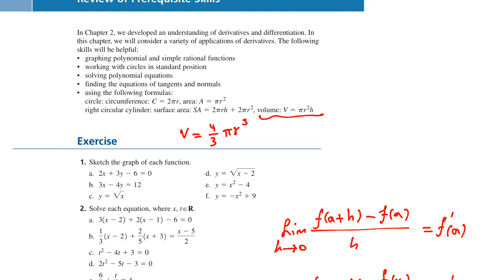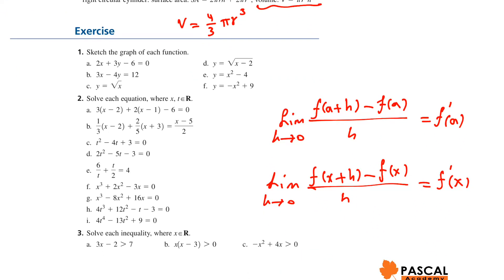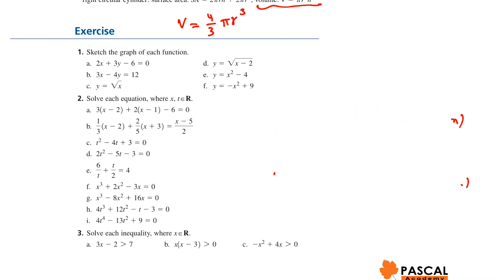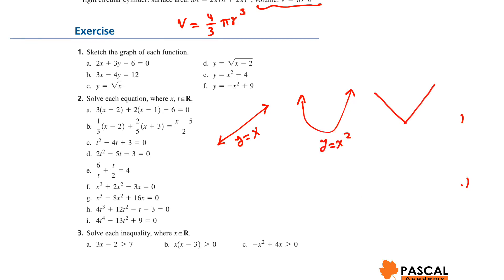What we need in this chapter is working a little bit with inequalities and knowing the graphs of basic functions. In some cases we need to draw y equals x, y equals x², y equals the absolute value of x, y equals the square root of x, and y equals 1 over x.